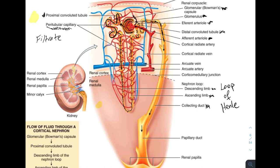The collecting duct serves several nephrons — different nephrons drain into it at various points. It's not urine yet; the filtrate can still change throughout this collecting duct. Near the bottom, you find the renal papilla, and right under that is where the minor calyx is found.